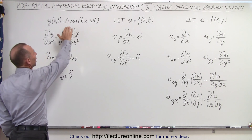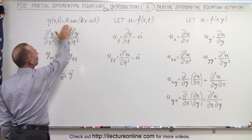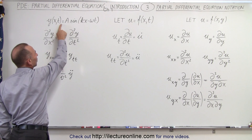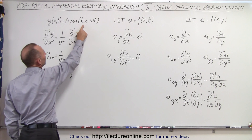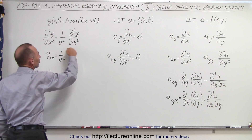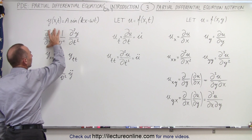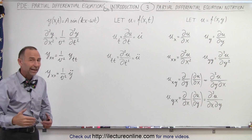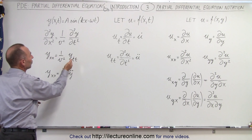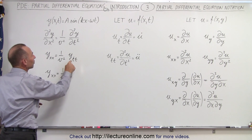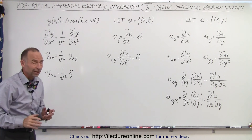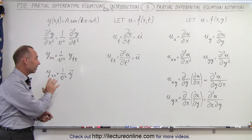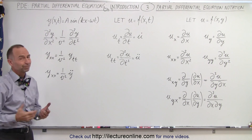Taking the wave function that moves at velocity v, described as y — the height of the function as a function of x and t — written as the amplitude times the sine of kx minus omega t, and using its corresponding partial differential equation, we can rewrite the spatial second derivative as y sub xx and the time second derivative as y with two dots on top. That makes it a whole lot easier to write and cleaner to look at, and it's a lot quicker than writing out the full curl notation.